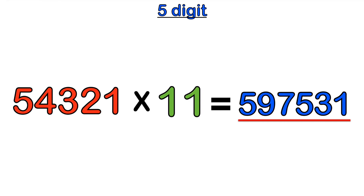And it's that simple. The only numbers you multiply are the last digit and the first digit of your number. Each digit in between, you add the adjacent number pairs, moving consecutively to the left until you reach the first digit.